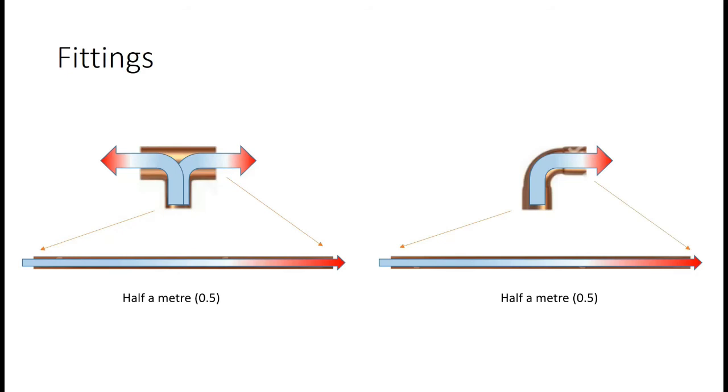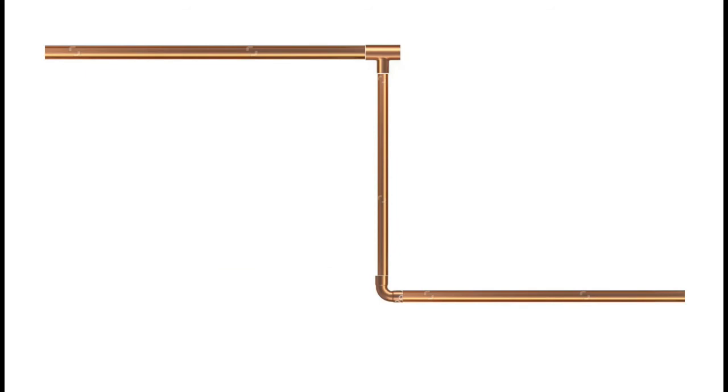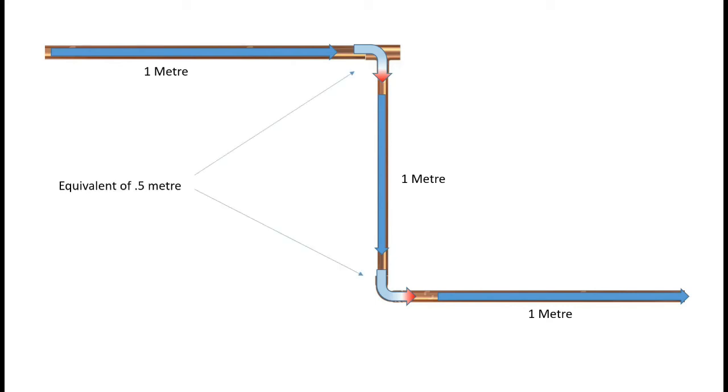Now we can compensate for that when we're measuring a system. Here, for example, is a very straightforward set of pipes. We've got three straights at one metre long. But we've got two angles where the gas has been made to change direction. The changes of direction are equivalent to 0.5 of a metre.